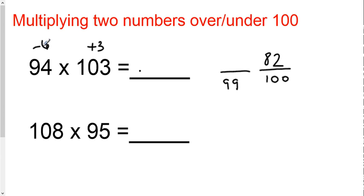Then, you're going to add the negative 6 and the 3. Negative 6 plus 3 is negative 3. You're going to either add or subtract that to 99. In this case, I'm going to subtract it because negative 6 plus 3 is negative 3. I'm going to subtract 3 from 99, and I get 96. So my answer would be 9, 6, 8, 2.